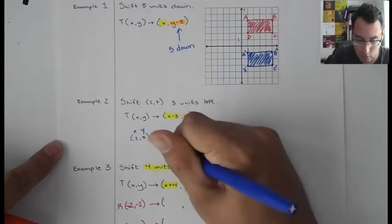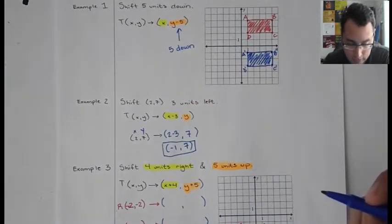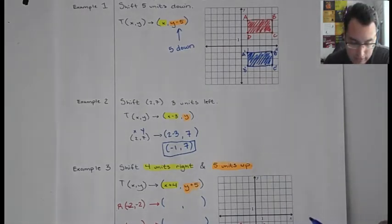And this is seven. So our coordinate, if we shift this down three units... or sorry, left three units, it is at the coordinate negative one, seven.